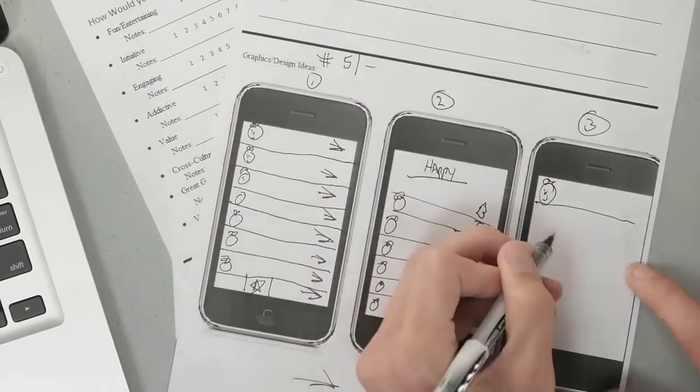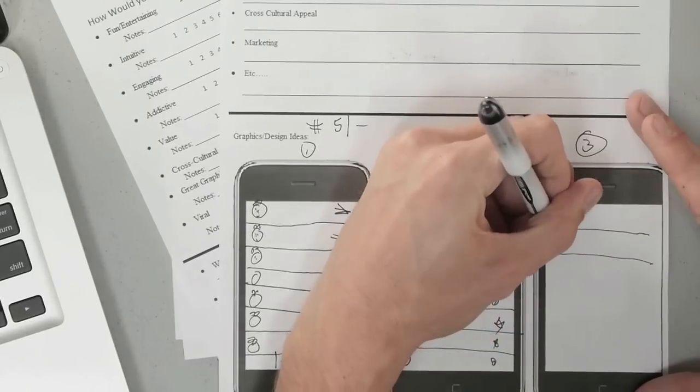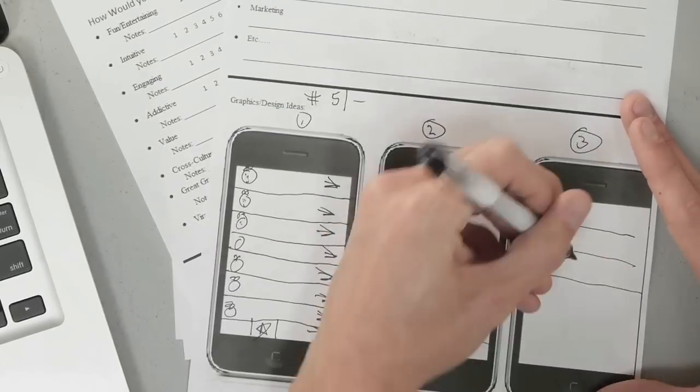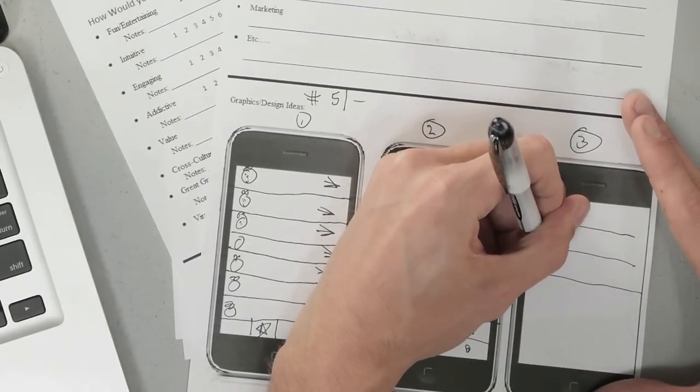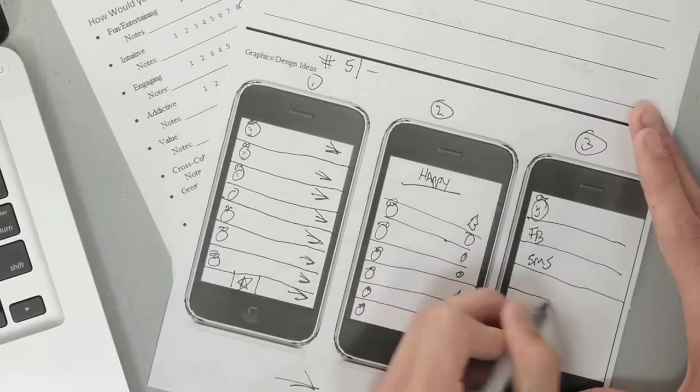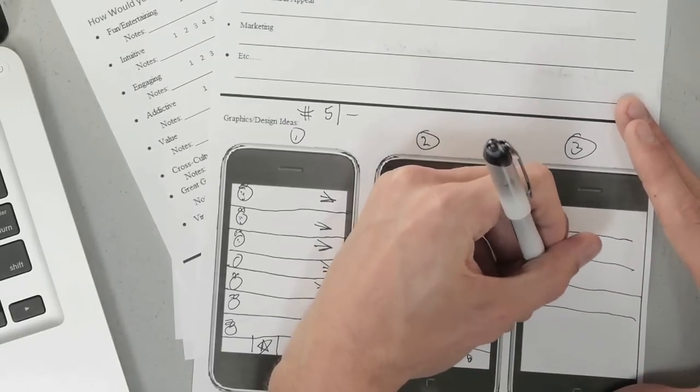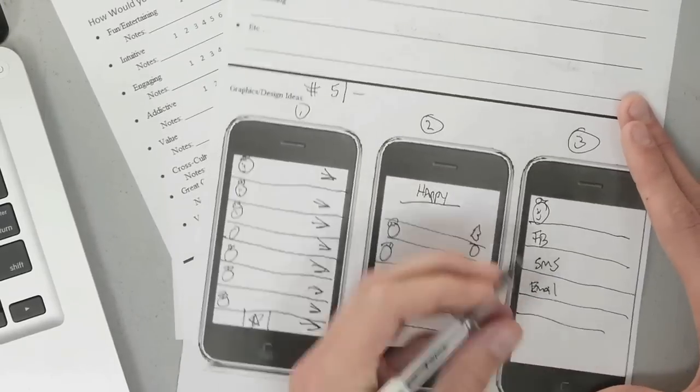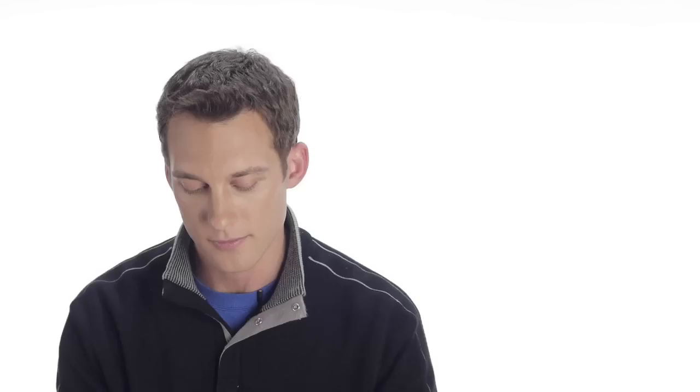And so right now, they can share with Facebook. They click on this one, it's going to be literally a text message. They click this one, it's going to be an email. And if they click on this one after that, it's going to be a favorite.